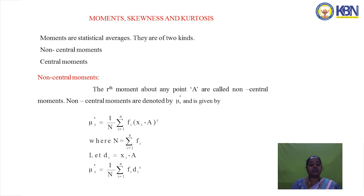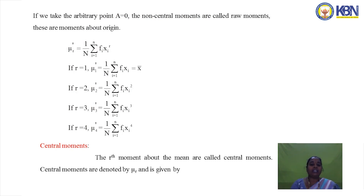Here N is the total frequency, and di = xi − A is the deviation between the observed value and the point, so μr′ = (1/N) Σfi·di^r. If A = 0, these are called raw moments, also denoted μr′ = (1/N) Σfi·xi^r. When r = 1, μ1′ is the mean; when r = 2, μ2′ = (1/N) Σfi·xi²; and so on for r = 3 and r = 4.